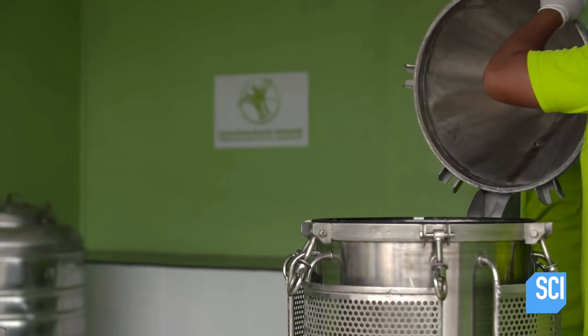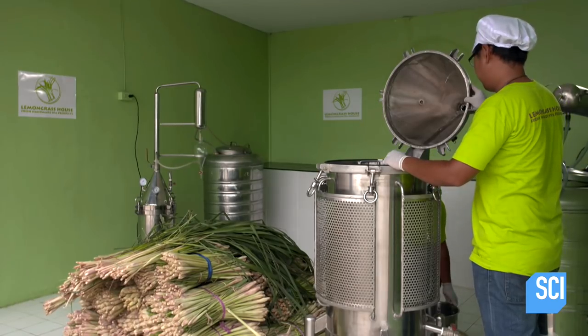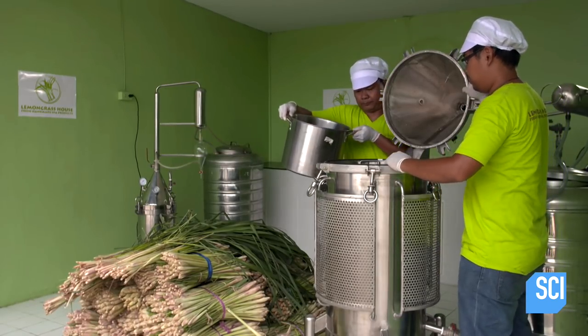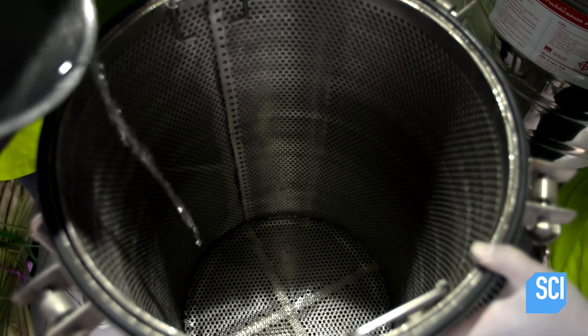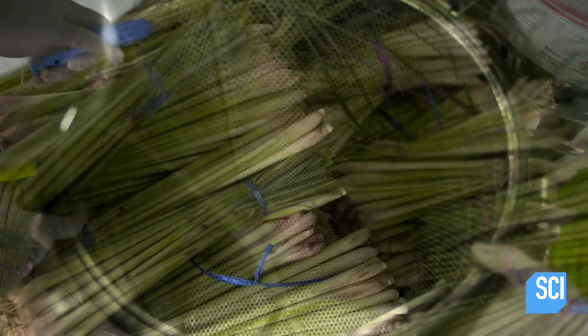Workers unlock the top of the still and pour in chlorine-free, deionized water. Once the still is one-quarter full, they add the lemongrass.